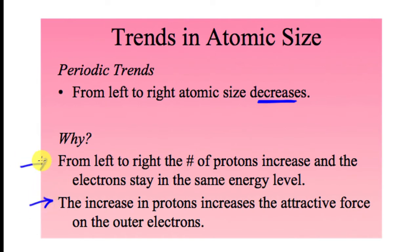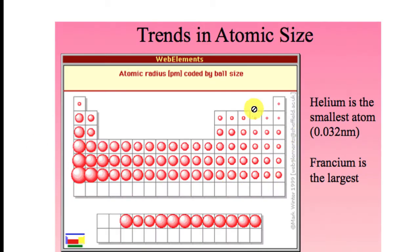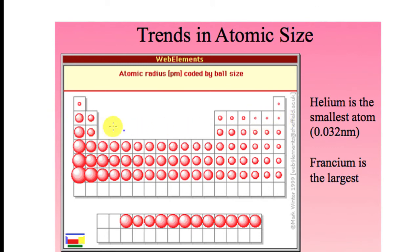So the trend going across a period is the opposite of what we see going down a group — we see a decrease in atomic size. Overall on the periodic table, francium is the biggest atom and helium is the smallest. Electrons in the same energy level experience increasing nuclear pull as protons increase, shrinking the atom. This is an overall generalization — there is some variation in the actual data due to quantum mechanics.